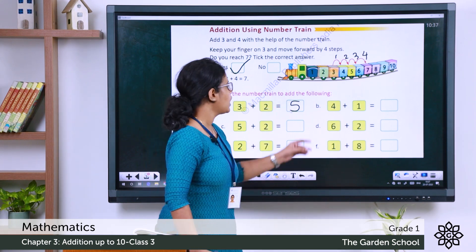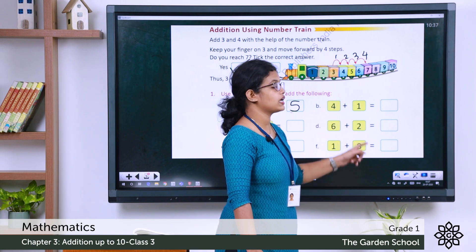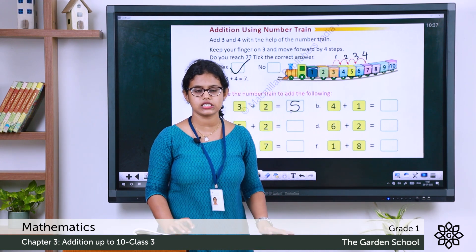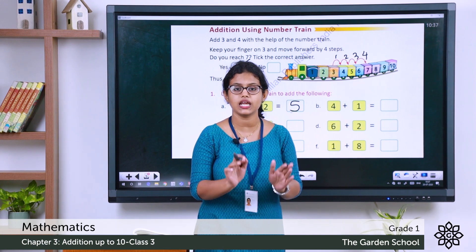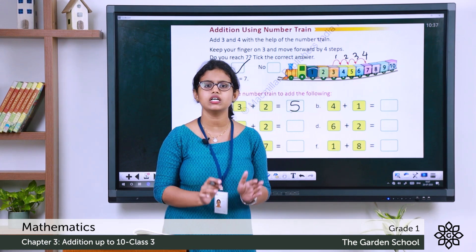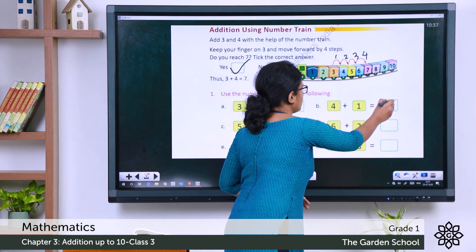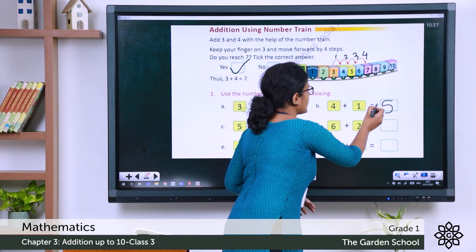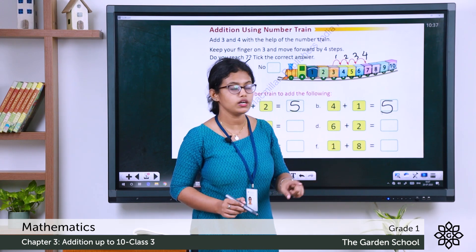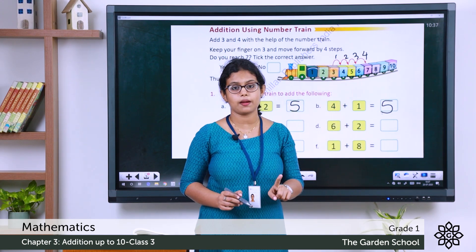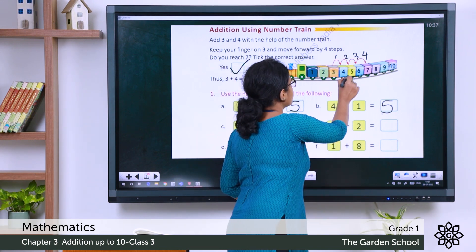Next: 4 plus 1. We learned that when you add 1 to any number, you get the next number. So 4 plus 1 is 5. On the number train, keep your finger on 4, move one step forward to 5.